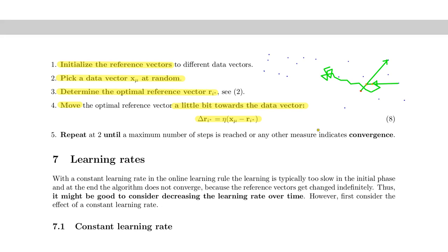There is no real convergence — the reference vector will move all the time. You might claim convergence if all reference points stay within a certain region. So you repeat this until some measure of convergence indicates you're done, or simply run it for a certain number of steps. This sounds simple but has a problem: the reference vector keeps moving around.